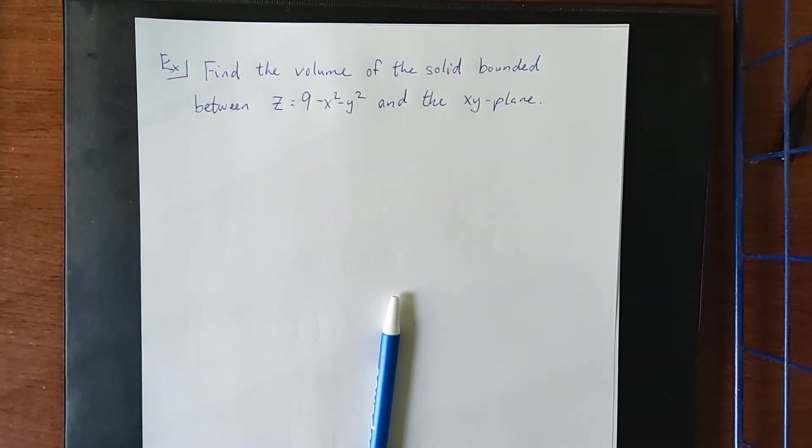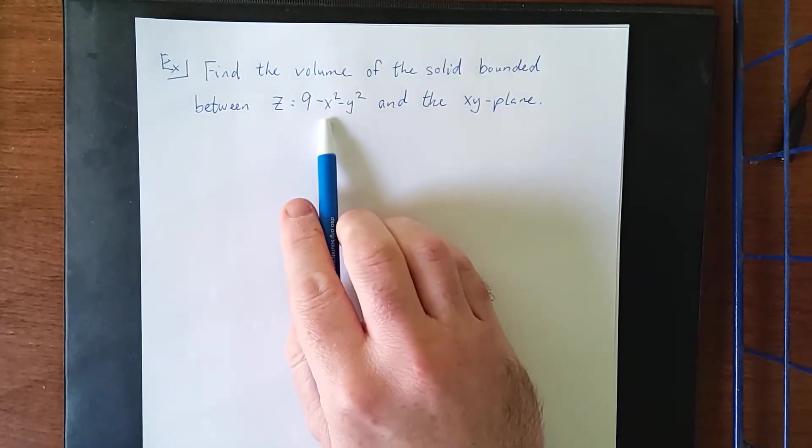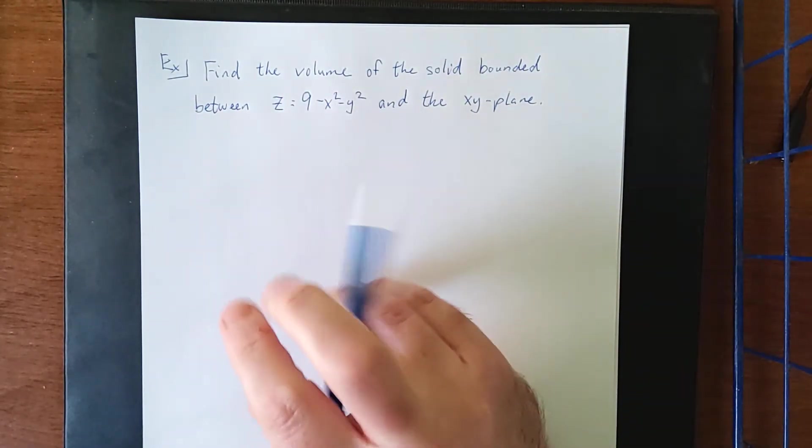As a reminder of the purpose of all of these double integrals, I would like to consider the following situation. I would like to find the volume of the solid that is bounded between z equals 9 minus x squared minus y squared and the xy plane.